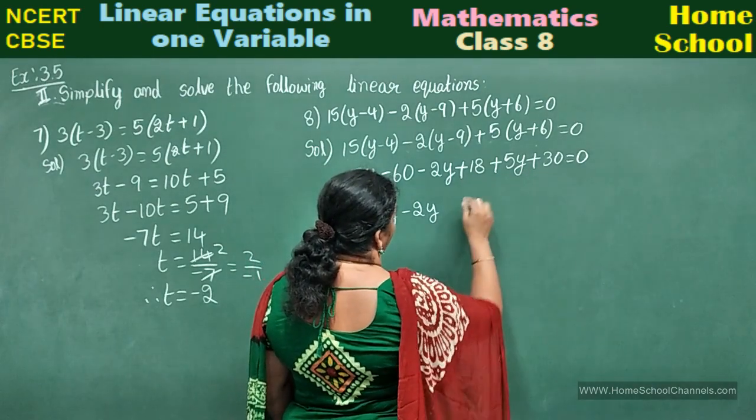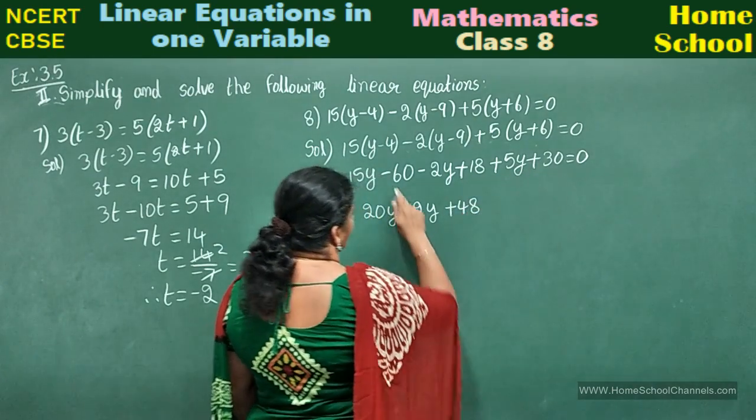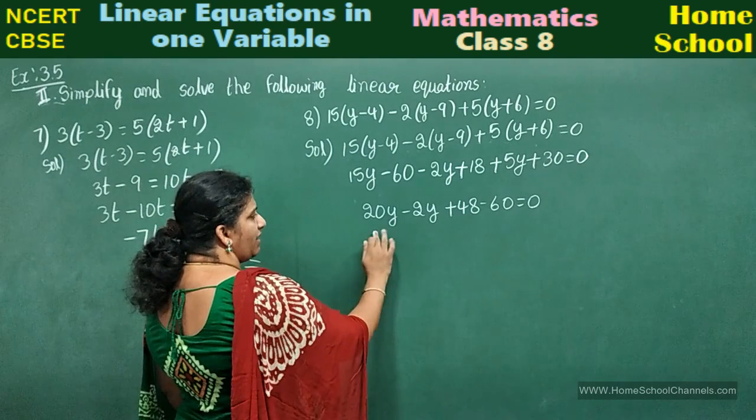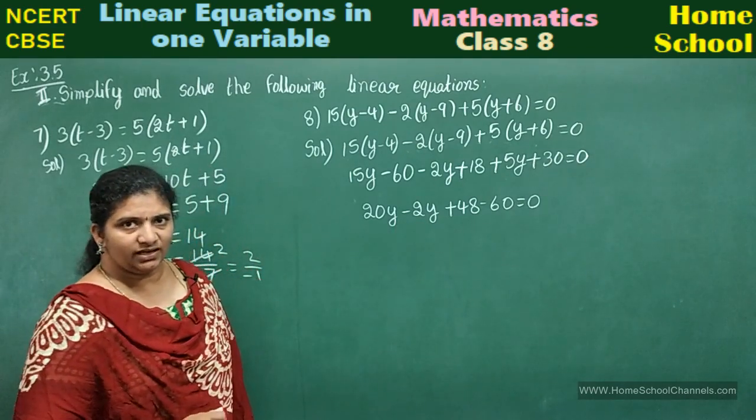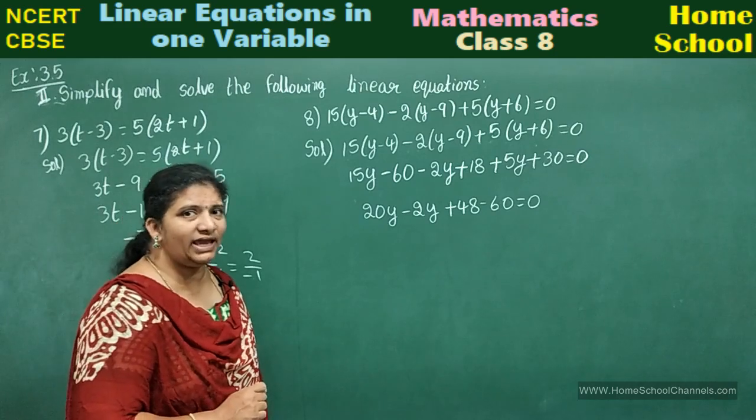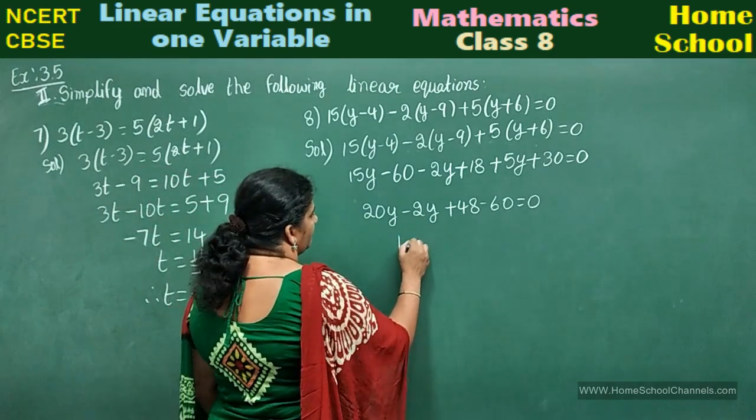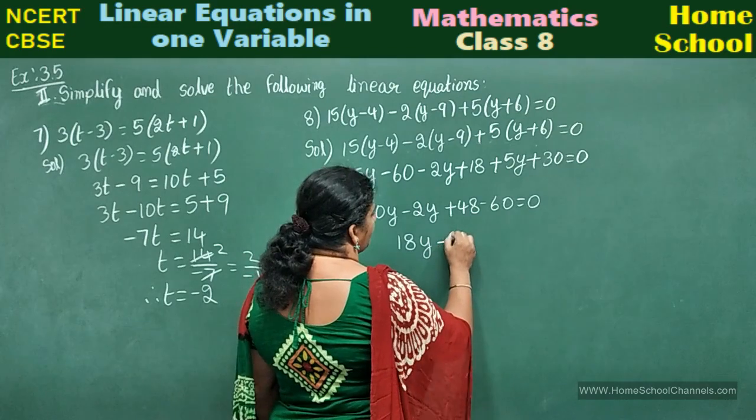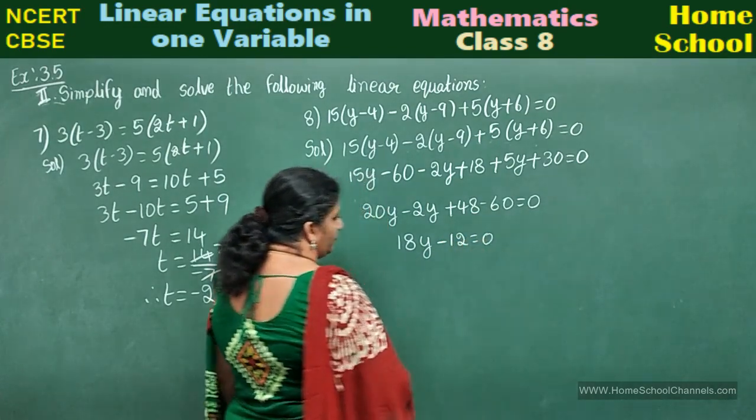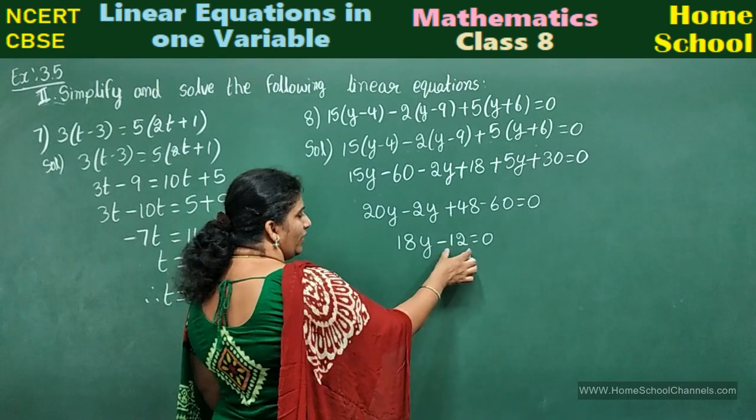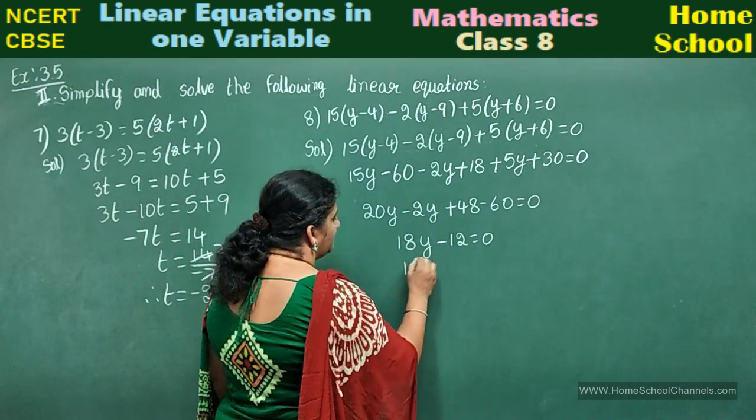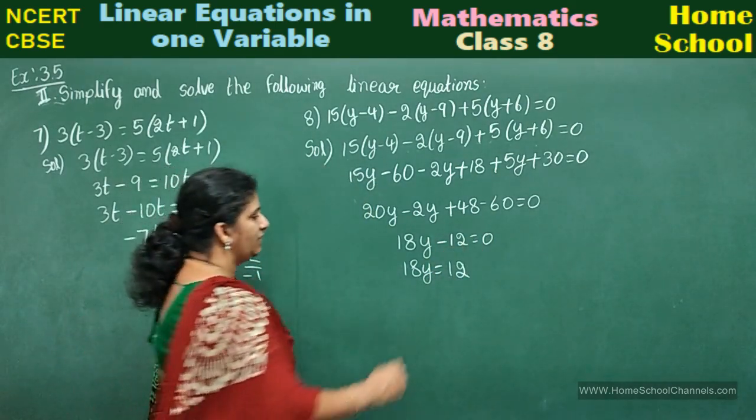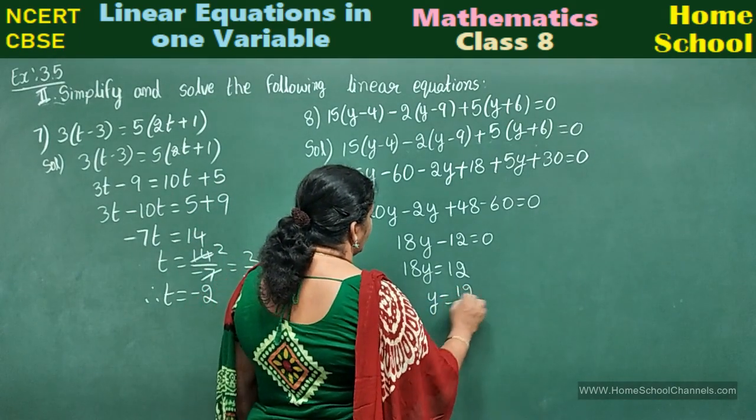Next numbers: 30 plus 18 is 48, and here minus 60 equal to 0. Now 20y minus 2y: take out y common. 20 minus 2 will be 18y. 48 minus 60 will be minus 12 equal to 0. Other than variable term, you have minus 12. Transpose to the other side.